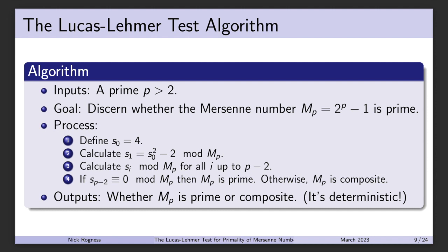Importantly, this is a deterministic algorithm. Unlike some other primality tests such as the Fermat test, where there's a probability associated with whether the output is correct, the Lucas-Lehmer test gives a certain answer — if it says a Mersenne number is prime, you can be certain it is prime. There's no probability associated with it.